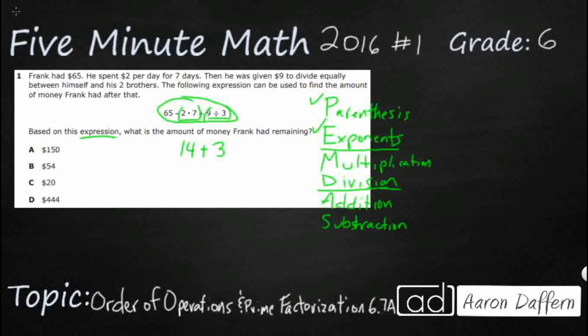And then we still have this 65 minus. So what we did is we took our 2 times 7 and we brought that down to 14. We have our 9 divided by 3, bring that down to 3. And then we have 65 minus 14 plus 3.